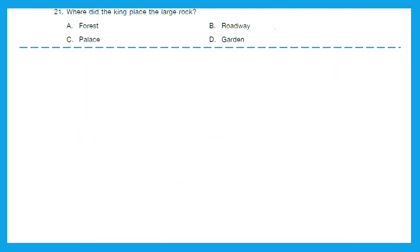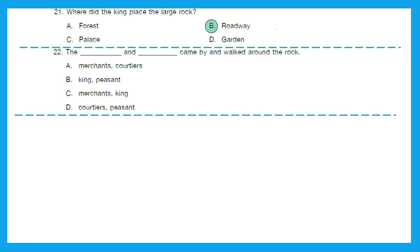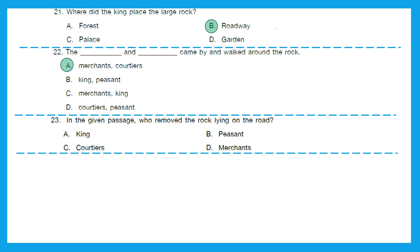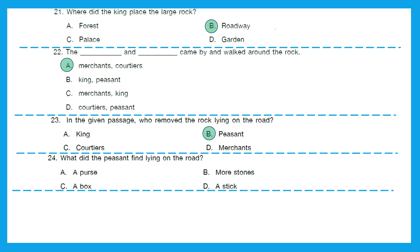Now let's answer the questions. Question 21: where did the king place the large rock? The right answer is on the roadway. Option B. Question 22: 'The dash and dash came by and walked around the rock.' It's option A — the merchants and courtiers came by and walked around the rock. Question 23: who removed the rock lying on the road? The right answer is option B, the peasant. Question 24: what did the peasant find lying on the road? It was a purse. Option A is the right answer.